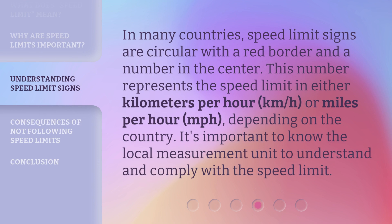In many countries, speed limit signs are circular with a red border and a number in the center. This number represents the speed limit in either kilometers per hour (km/h) or miles per hour (mph), depending on the country. It's important to know the local measurement unit to understand and comply with the speed limit.